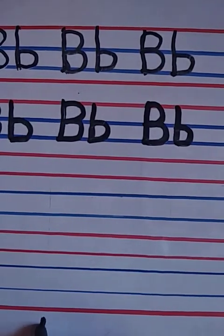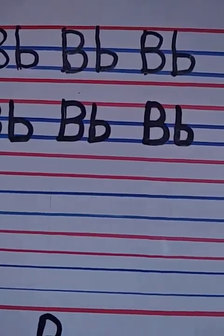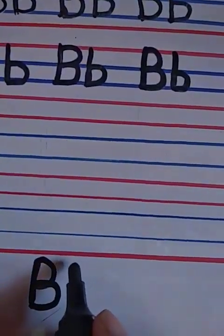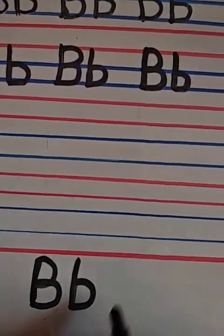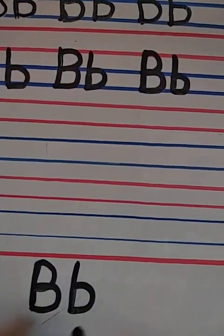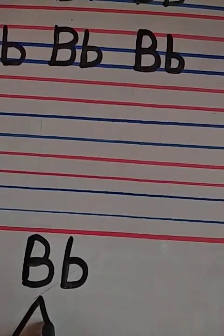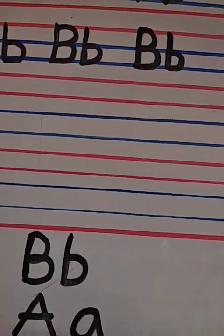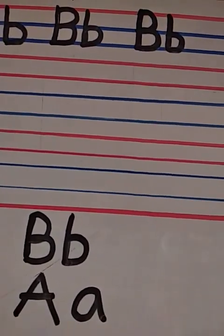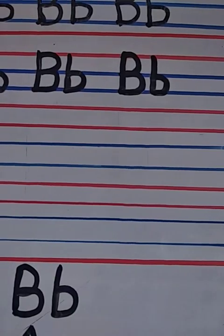B means: standing line, go up, a bump, a bump — that is B. Now A — we have seen A means how to do it: go up, come down, slant, then a bump, go up, come down. So this is A. A, B — thank you children, thank you for giving your precious time and watching the video. Please do subscribe if you have not yet subscribed.